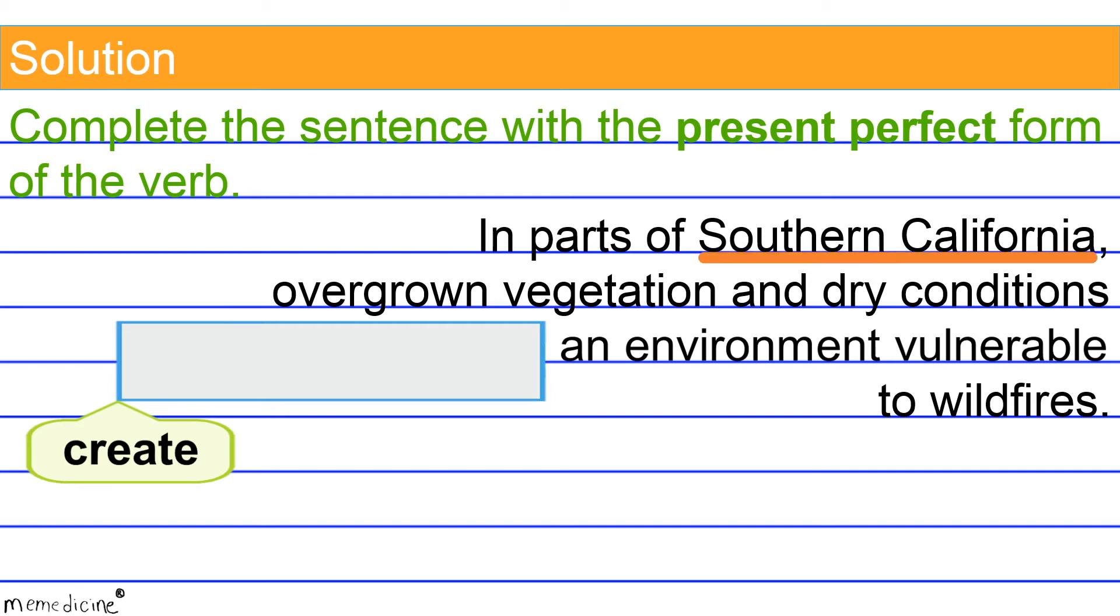All right, and have, H-A-V-E, for the first person singular pronoun I, also used with the first person plural pronoun we, as well as the second person singular pronoun you, and all other plural pronouns. So have is also paired with all other plural pronouns. And just in case you're wondering what a plural pronoun is, an example is wildfires. There's more than one. It ends in an S. So more than one means plural.